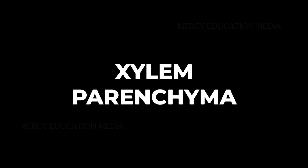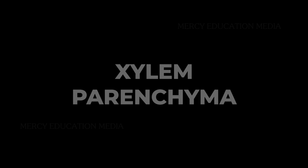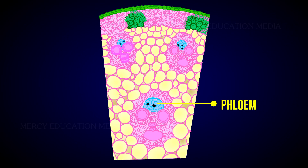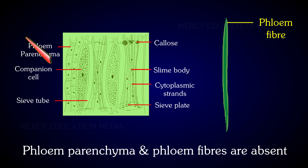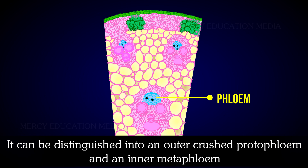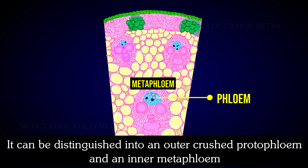What do you know about phloem? The phloem in the monocot stem consists of sieve tubes and companion cells. Phloem parenchyma and phloem fibers are absent. It can be distinguished into an outer crushed protophloem and an inner metaphloem.